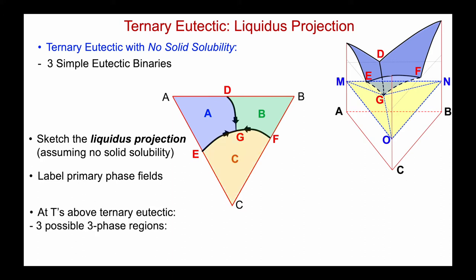If I'm at a temperature above the ternary eutectic, it's possible to have three different three-phase regions. For example, a three-phase equilibrium between liquid lying somewhere on the EG valley and C and A — I'd use this tie triangle, representing the equilibrium: liquid in equilibrium with A plus C.